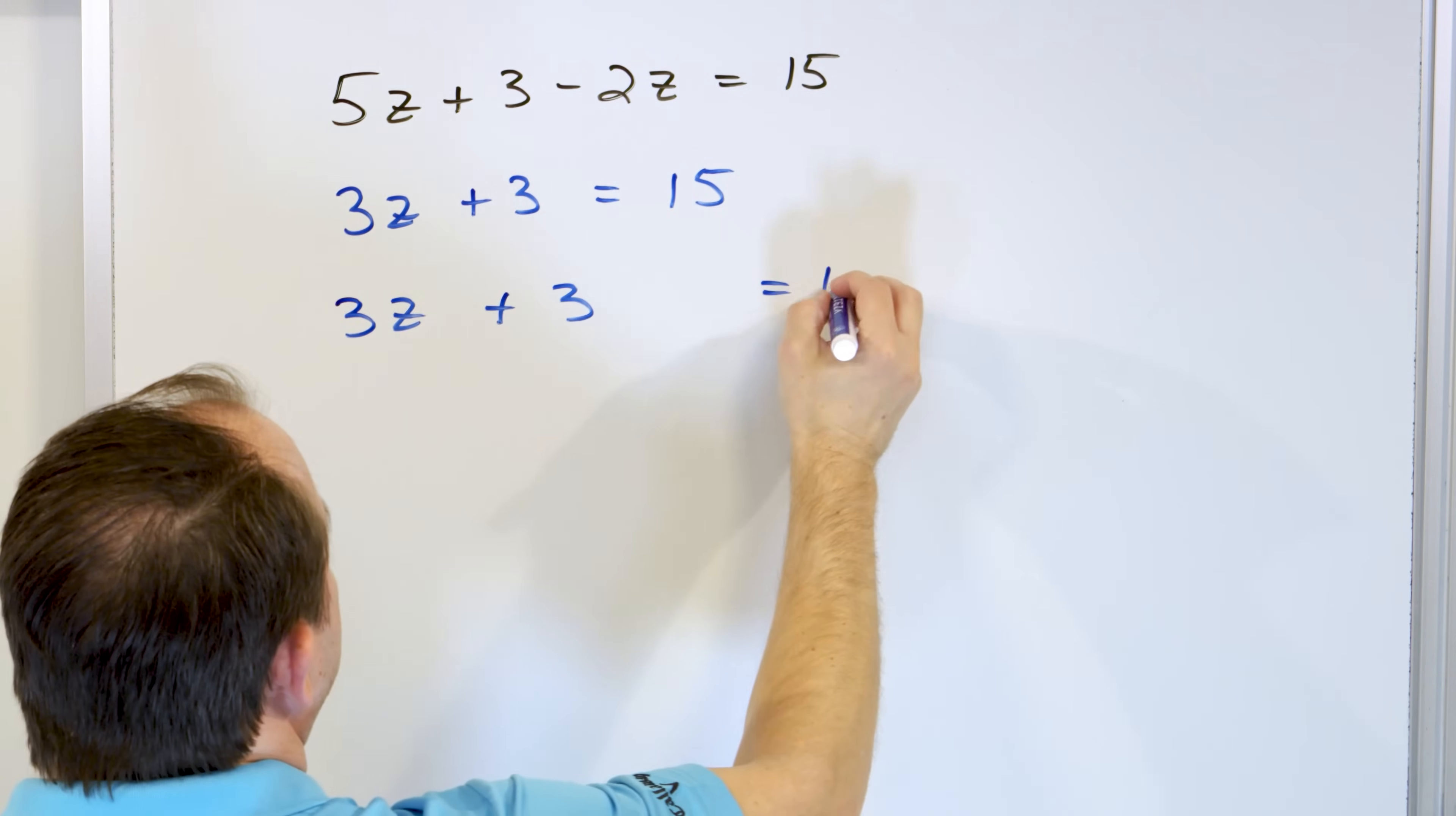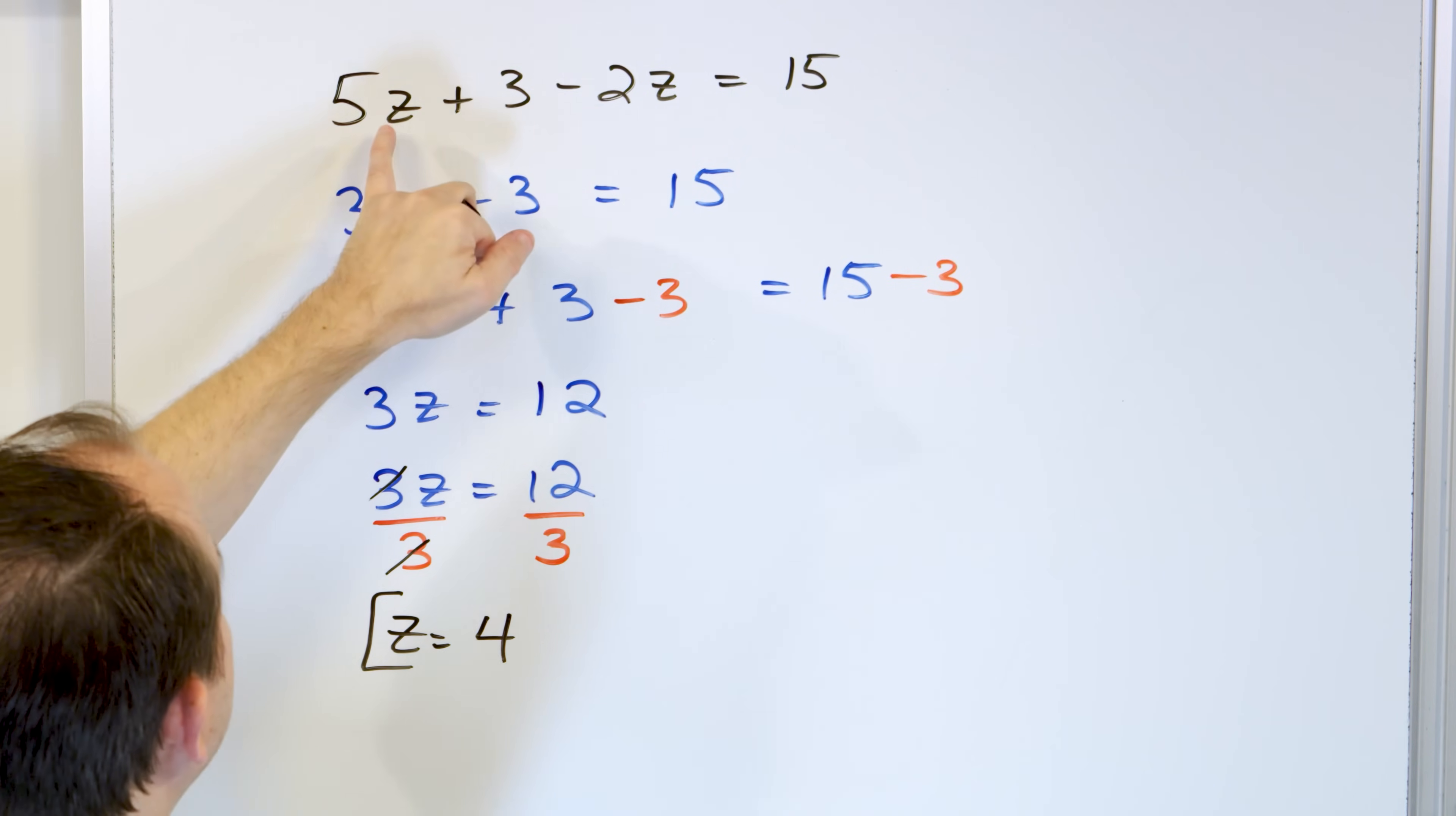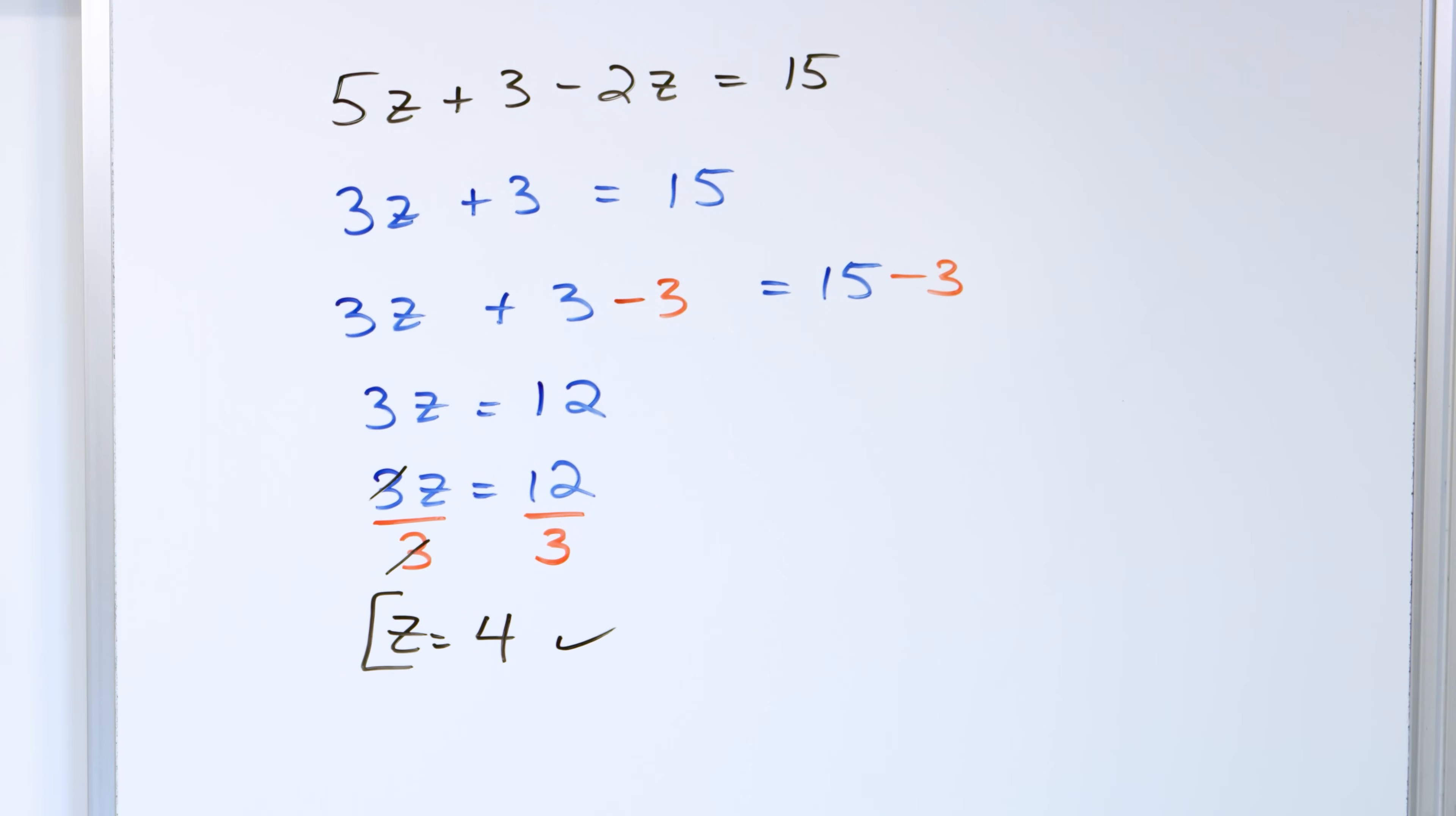So 3z plus 3 equals 15. We want to get rid of the plus 3 by subtracting 3. And what are we going to have? This will be 0. So 3 times z equals, what is this? 12. And then we now want to divide. So I'll rewrite this. 3z equals 12. We want to divide because we're multiplying by 3. So we'll divide by 3. And what do we get? Once we cancel, the 3s will cancel. And we'll have z equals 12 divided by 3 is 4. So the answer is 4. And you can check your work by putting a 4 in here. It may be a little harder to keep track of, but 5 times 4 is 20, right? 20 plus 3 will be 23. So here we have 23. And then the 2 times 4 is 8. So then what's 23 minus 8? 23 minus 8 actually is 15. So we know that that's the right answer.